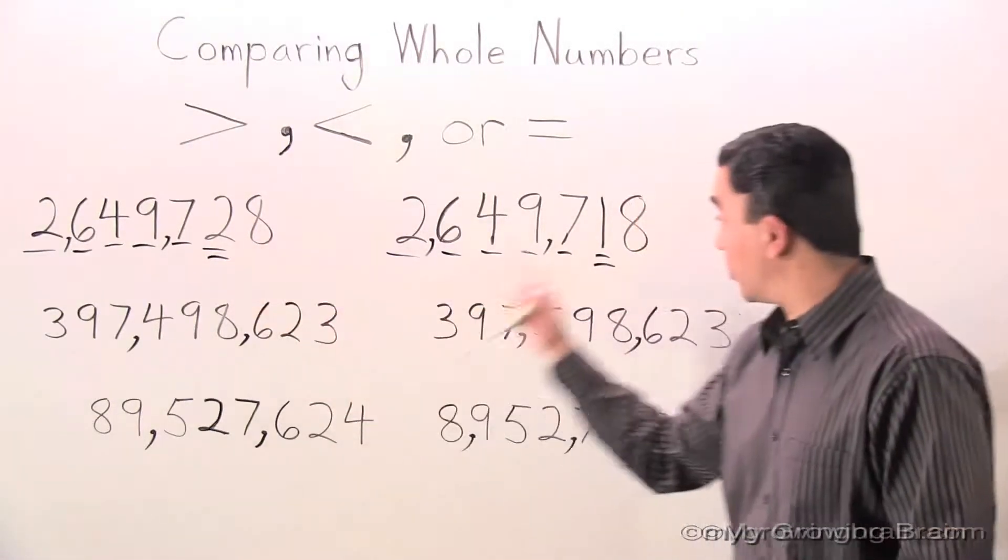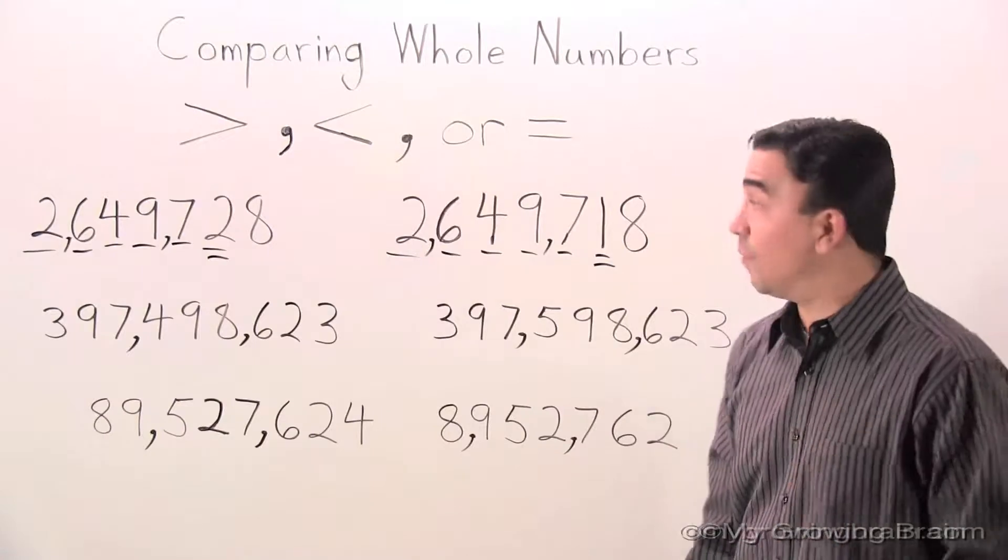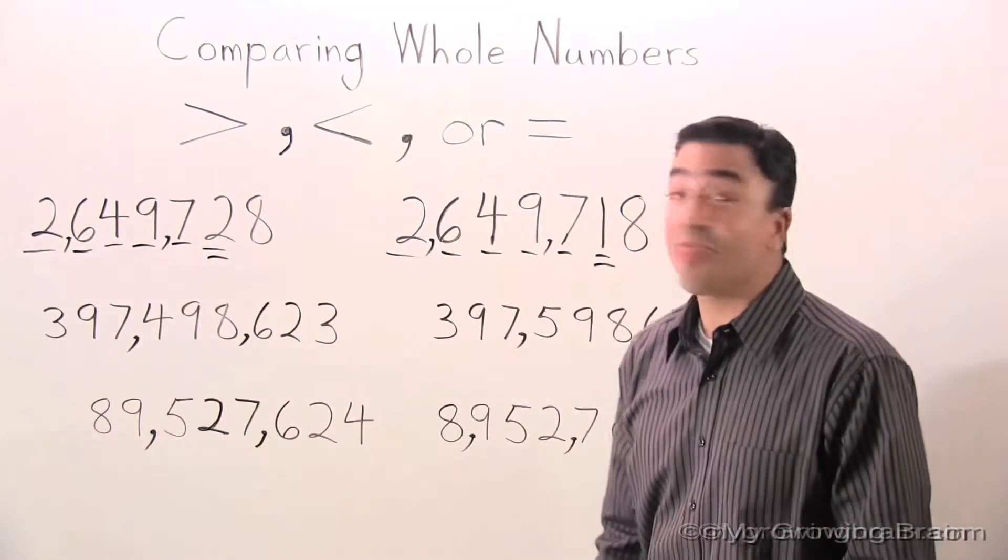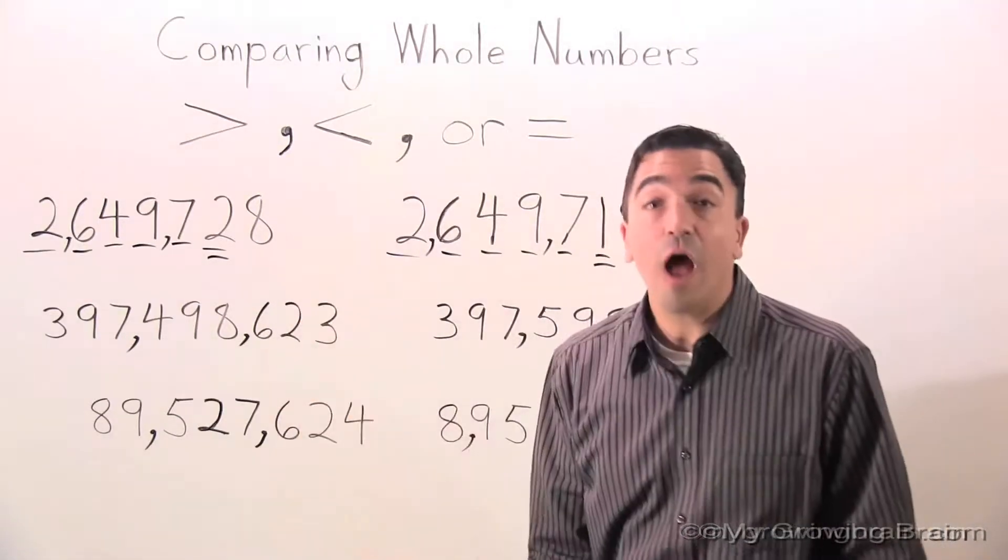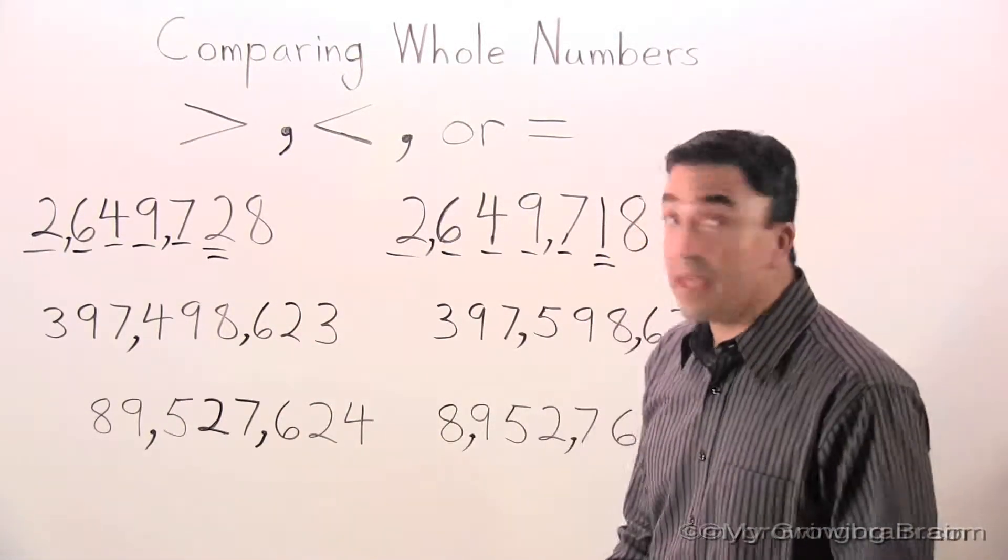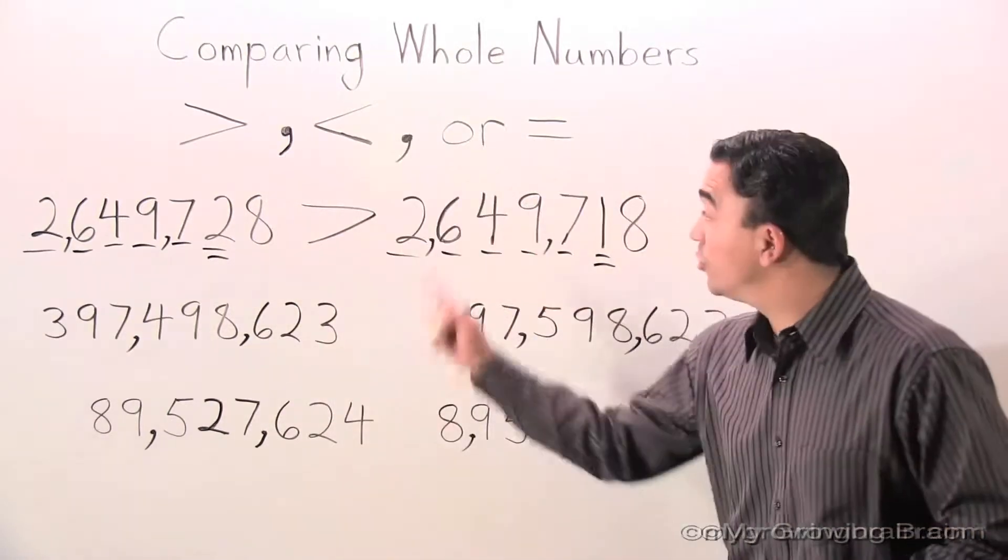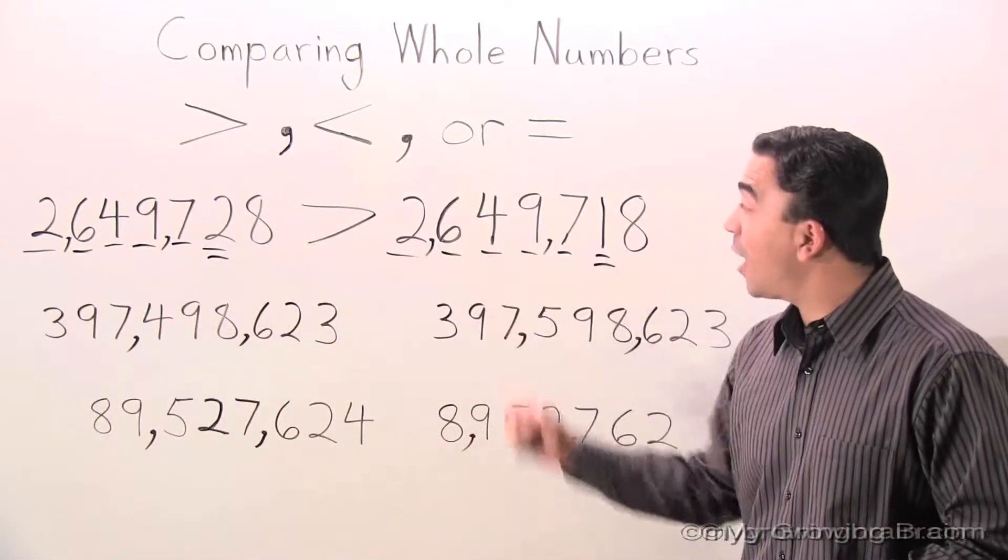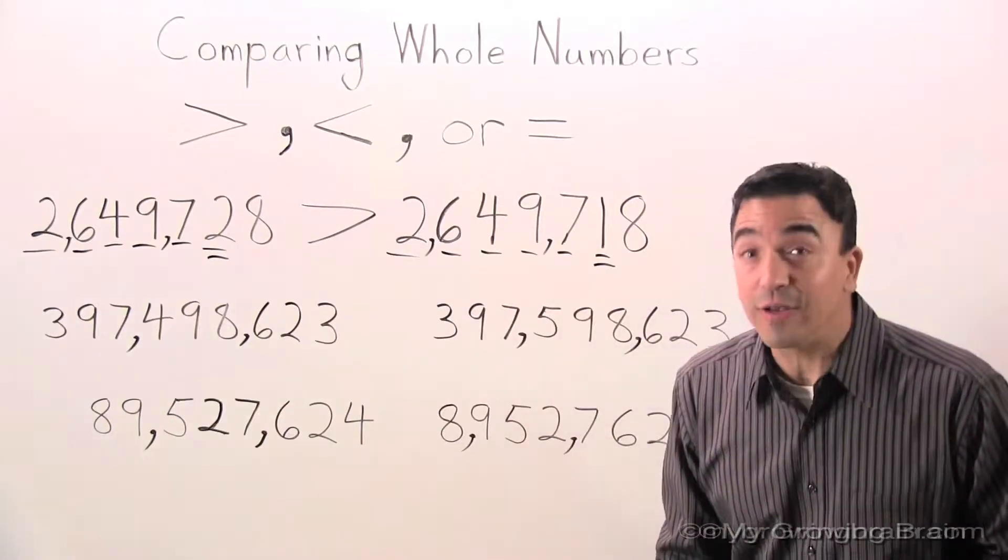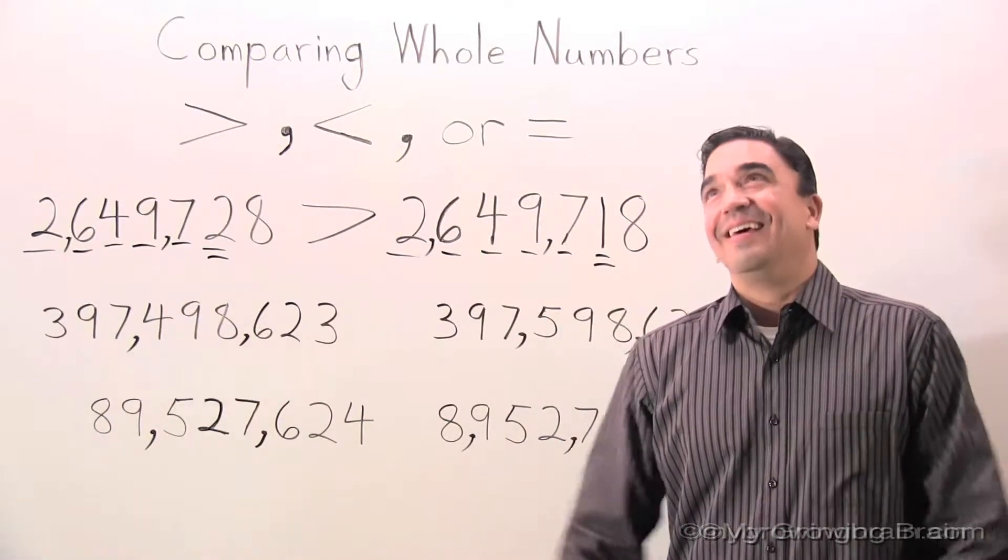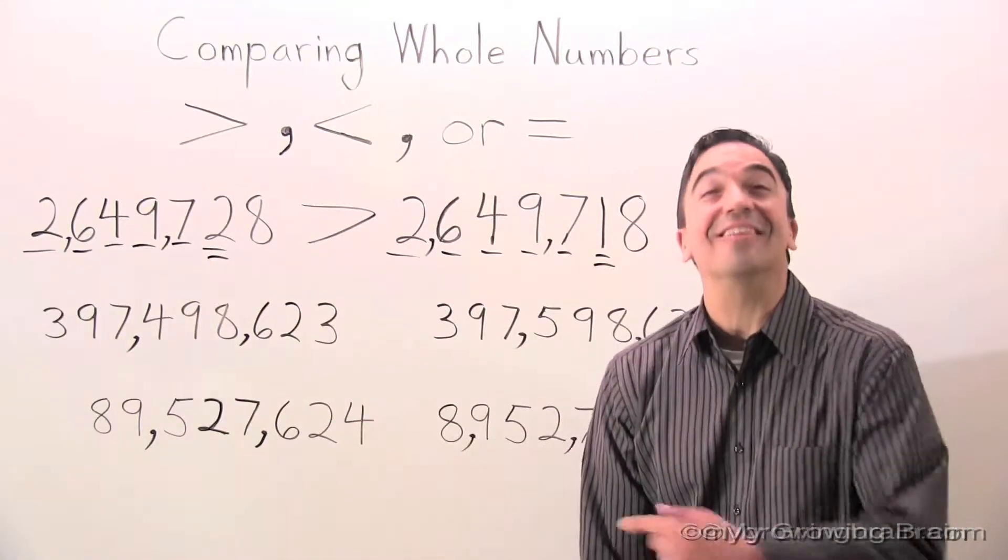2 is greater than 1. Therefore, 2,649,728 is greater than 2,649,718. Let's go to the next problem.